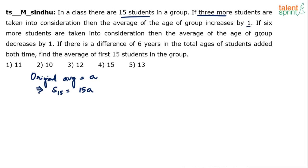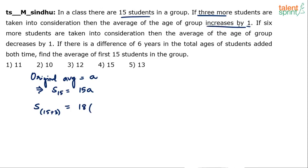Now, if three more students are considered, the average increases by one. We are taking three more students, so the new group has 15 plus 3 — that's 18 students. The new sum equals number of students times the new average. Number of students is 18, and since the average increases by one, the new average will be a plus 1. So the new sum is 18 times (a plus 1).